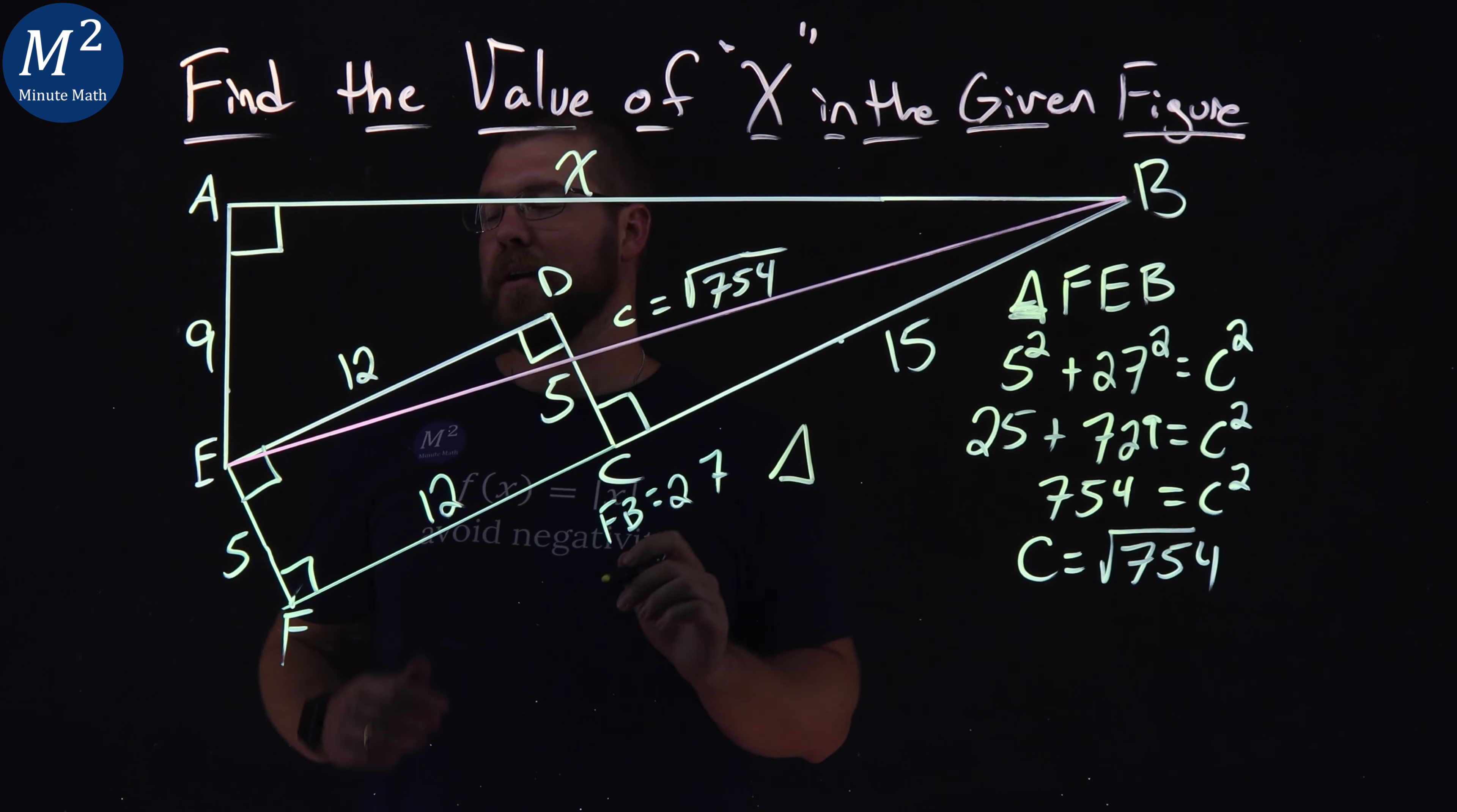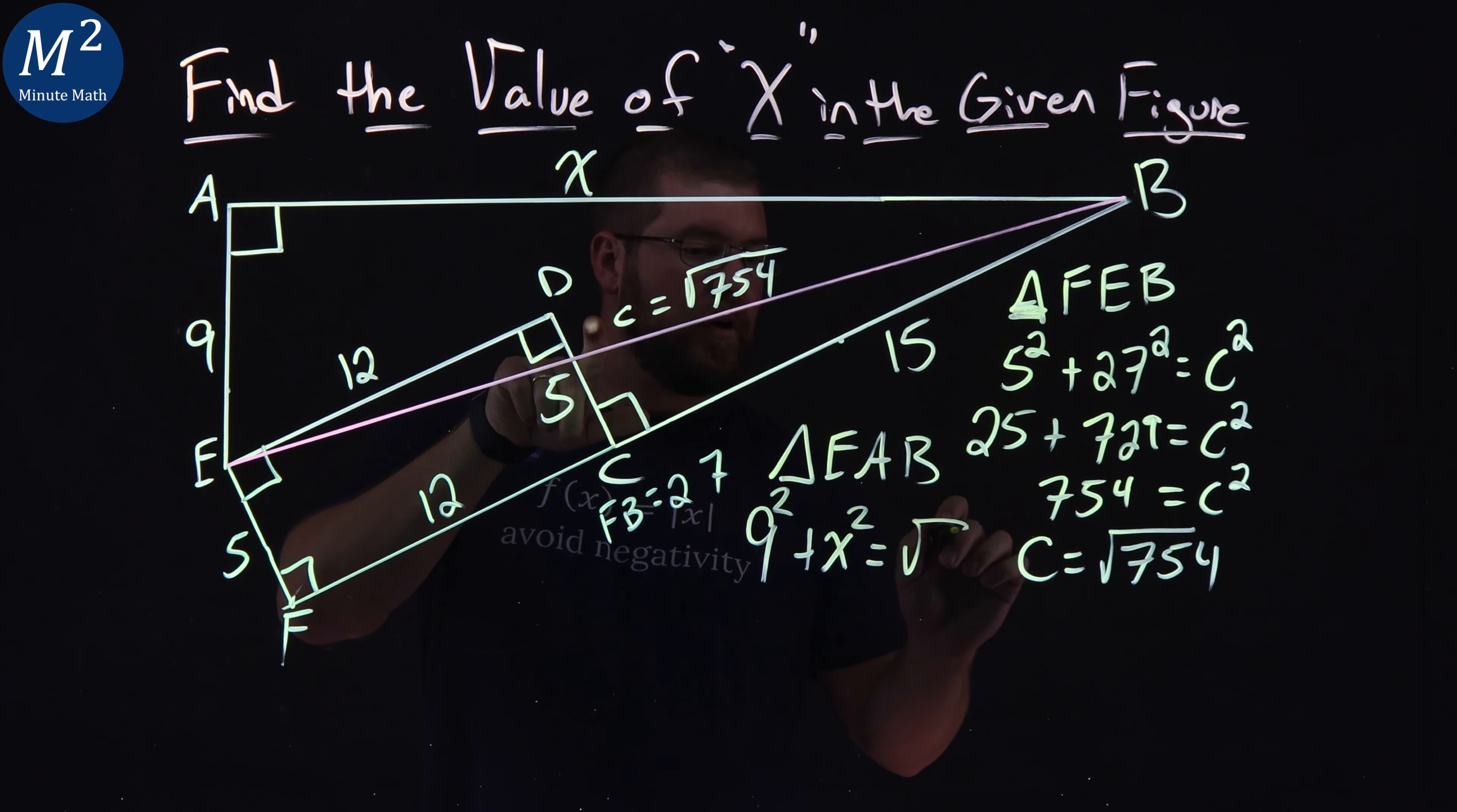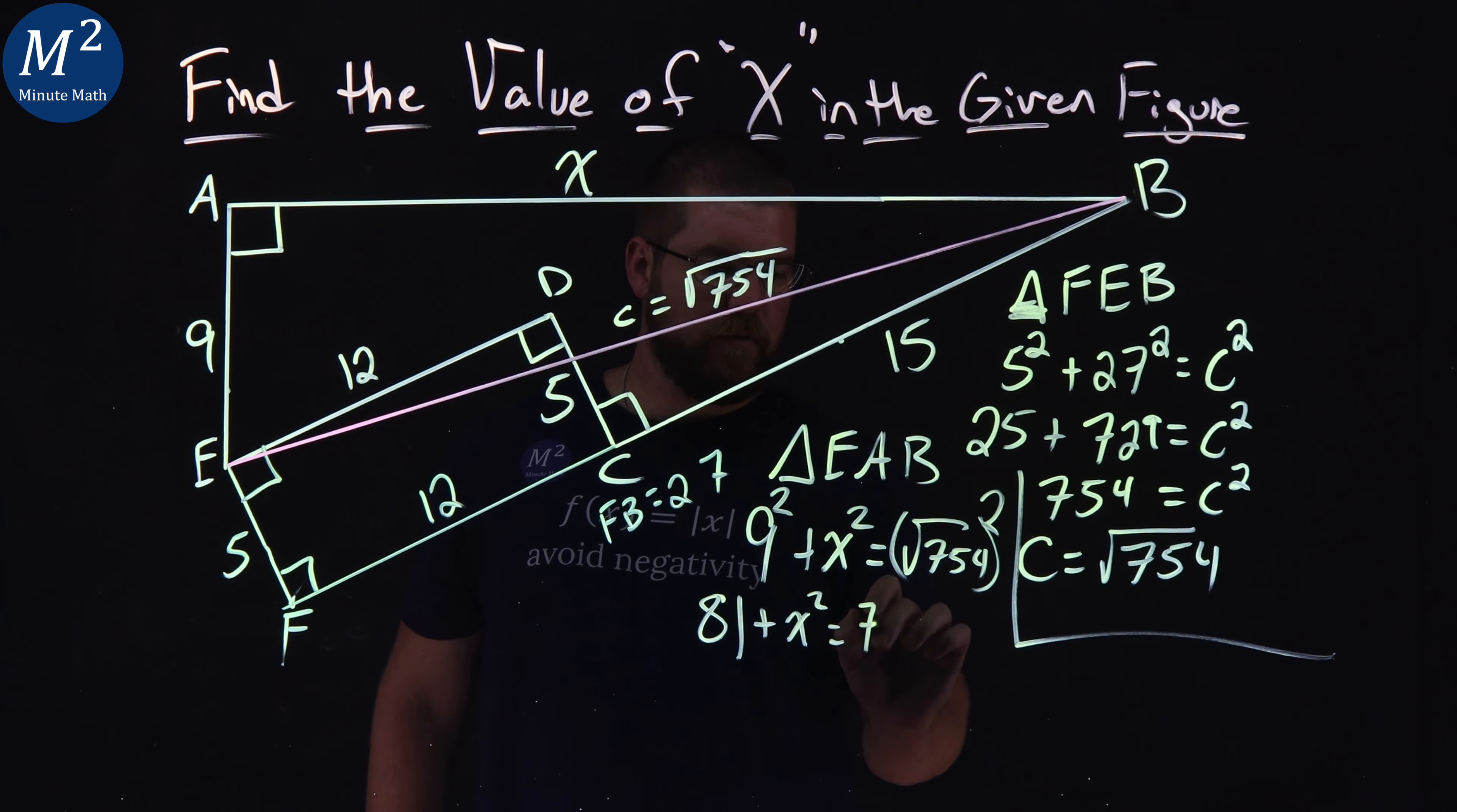So again, Pythagorean theorem with our triangle EAB. We have that triangle, Pythagorean theorem: 9 squared plus X squared, which we want to find, is equal to our C squared, square root of 754, all squared. 9 squared is 81, plus X squared, which we don't know. Square root of 754 squared is 754.